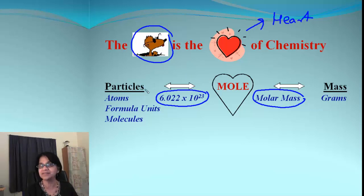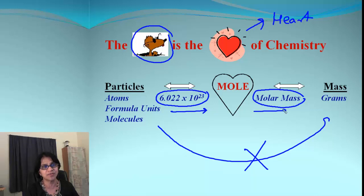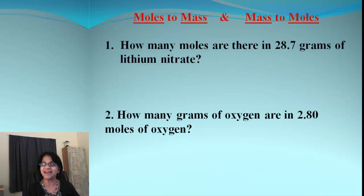If you're going to go from particles to mass, you cannot go directly from particles to mass. This is not allowed. We have to go from particles through moles and from moles to mass. Or if you're going to go from mass to particles, you go mass to moles and moles to particles. And we're going to make use of this molar mass and Avogadro's number in our conversions. All right. So let's begin now.